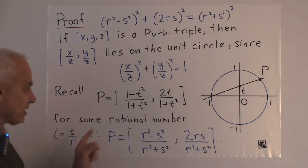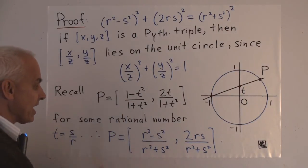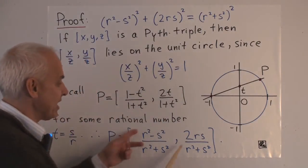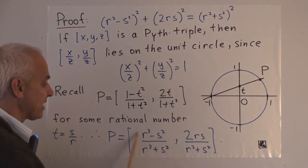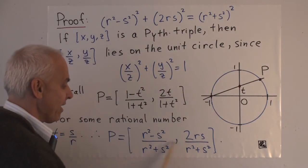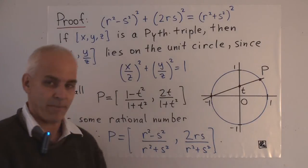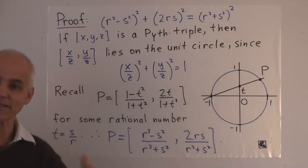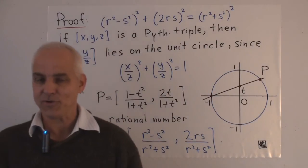And when we plug s/r into here and then multiply by r² to clear fractions, then we get (r²-s²)/(r²+s²) and 2rs/(r²+s²). And we see that we're recovering the values x, y, and z in the denominator. So it's really a theorem that's covered by our parametrization of the circle result earlier.